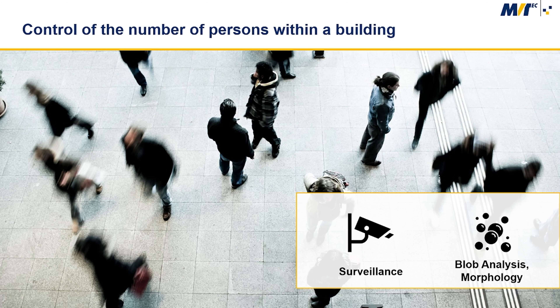Let me introduce an application developed by our partner Strayland Control Systems, aimed at counting the number of people entering and leaving a building. Controlling the number of people in a building can be necessary for many reasons, as the COVID-19 pandemic has shown. The goal of this application is to precisely indicate the number of people present in a building in real time.